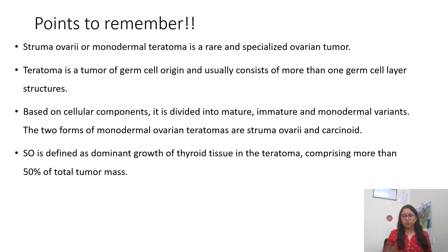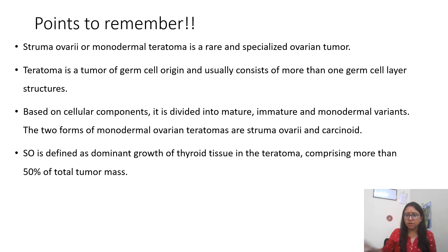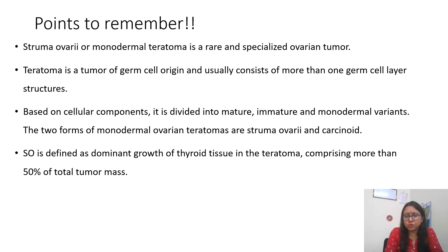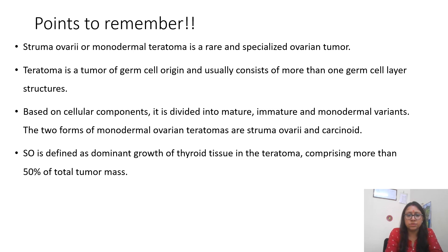The final diagnosis was struma ovarii. In teratoma, cells from different germ layers — ectoderm, endoderm, and mesoderm — are seen. Struma ovarii, also called monodermal teratoma, is a very rare and specialized ovarian teratoma. Teratoma is a tumor of germ cell origin that contains more than one germ cell layer structure, and based on cellular components it is divided into mature, immature, and monodermal variants.